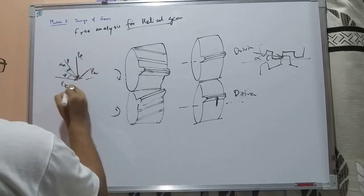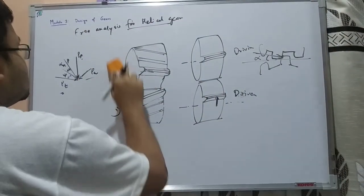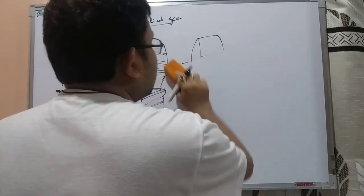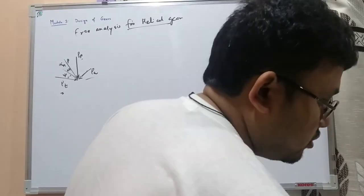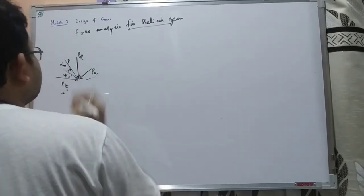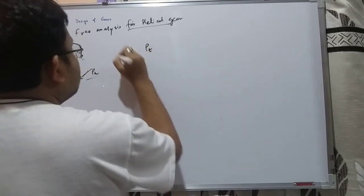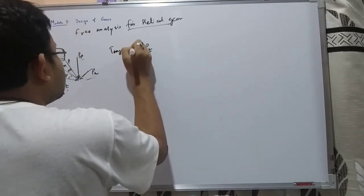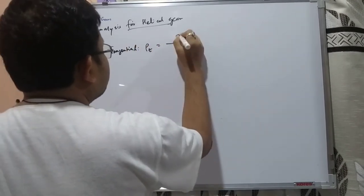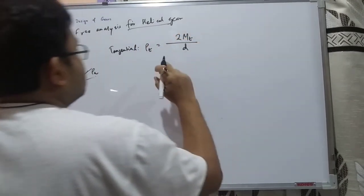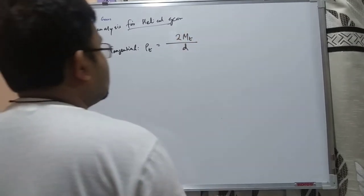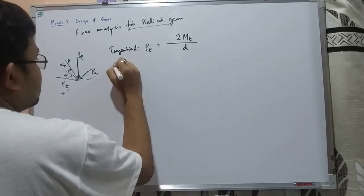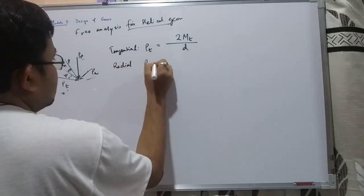The force analysis formulas: the tangential component Pt = 2T / d, where T is the torque and d is the pitch circle diameter. The radial force Pr can also be found using the standard formulas from the data book.